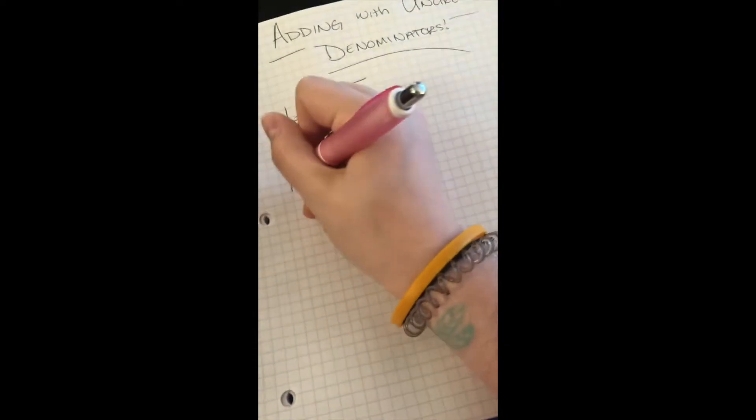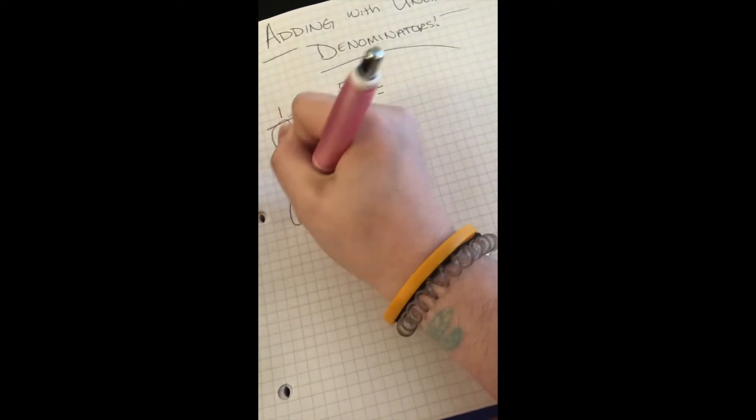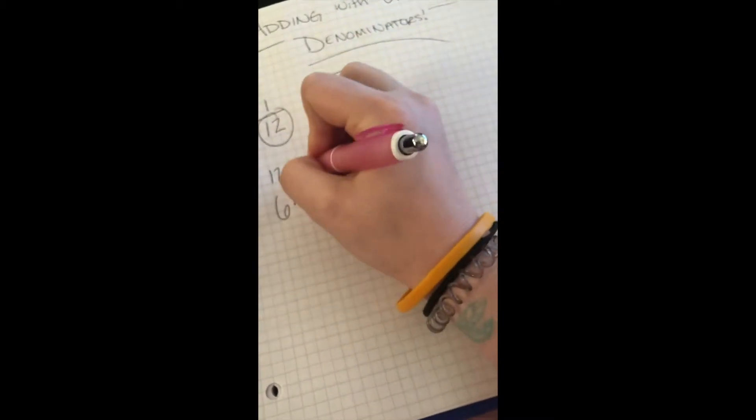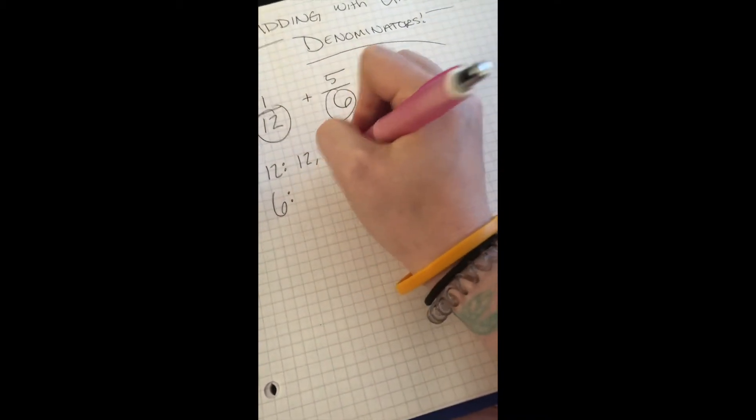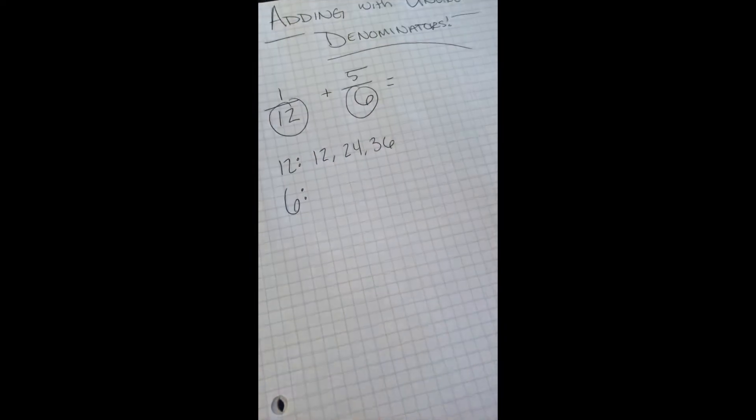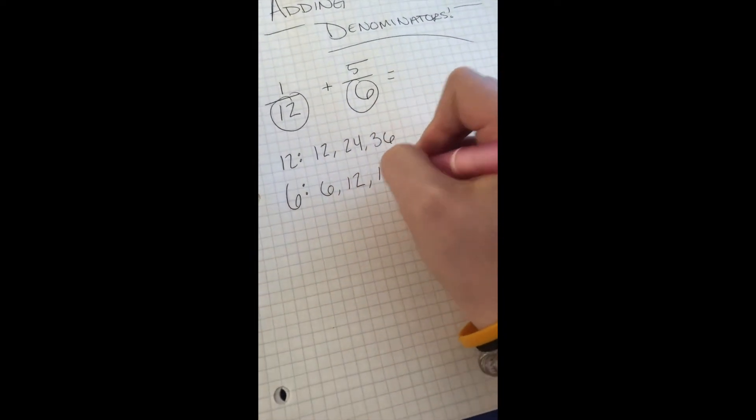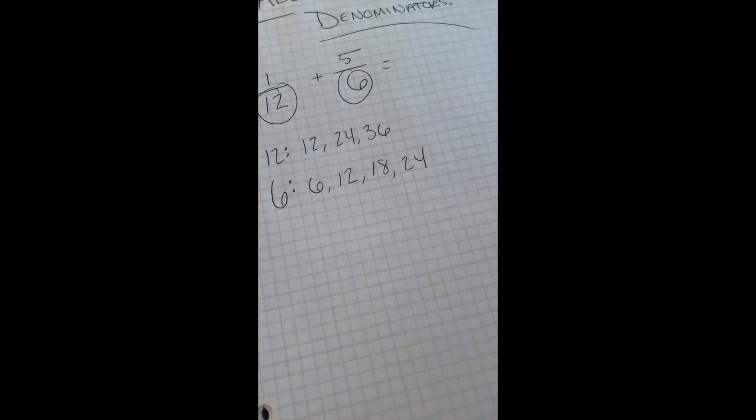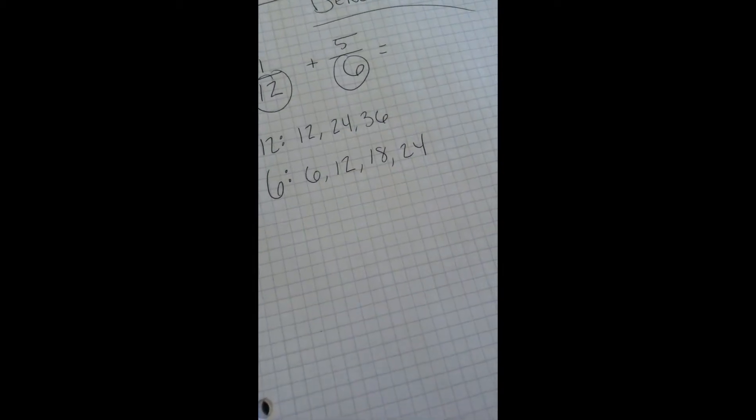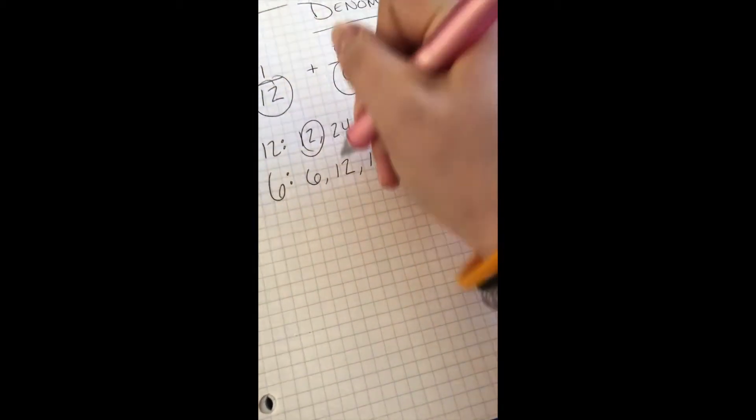So you're going to list your multiples. So you have 12, and you have 6. So you do 12, 24, 36, and then you would do 6, 12, 18, 24, and you find the one that's the smallest that is the same. And if you look, they both have 12.